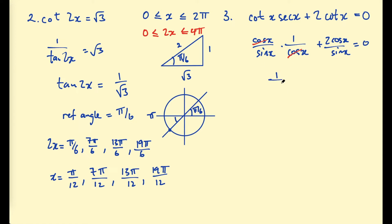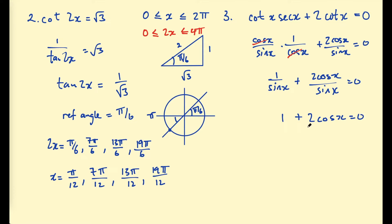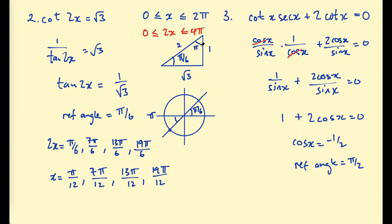After canceling, we get 1 over sin x plus 2 cosine x over sin x equals 0. Multiplying through by sin x, we simplify and end up with cosine x equals negative 1/2. This has an exact value: using the 1-2-√3 triangle, cosine is adjacent over hypotenuse, giving the angle π/3. So our reference angle is π/3.